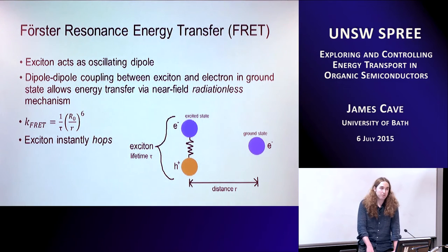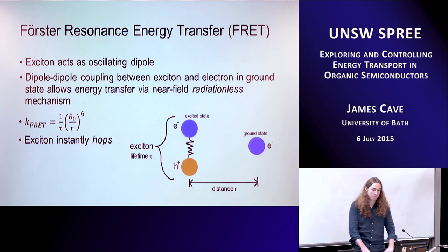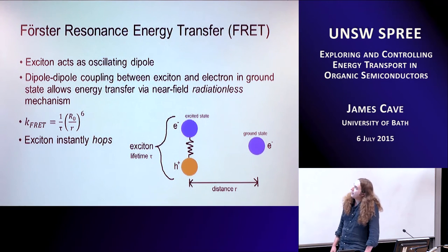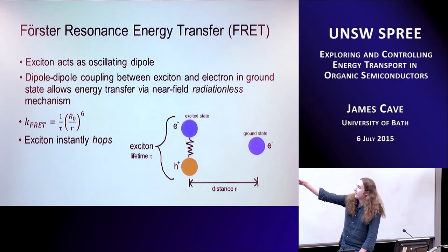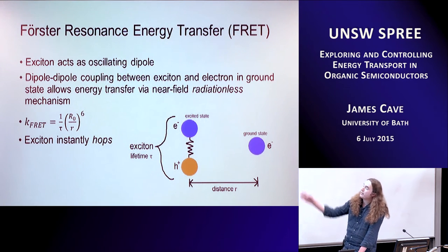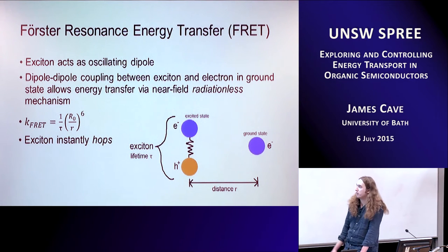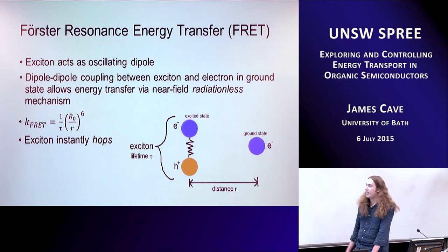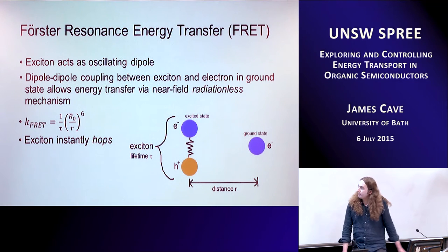Excitons have to move from where they're created to an interface. One of the ways they do this is Förster Resonance Energy Transfer. The electron and the hole act as a dipole — an oscillating dipole, like a little spring wiggling. Dipole-dipole coupling between the exciton and the ground-state electron allows energy transfer via a near-field effect. It's near-field because the wavelength of the photon would be much longer than the distance involved — on the order of one to ten nanometres.